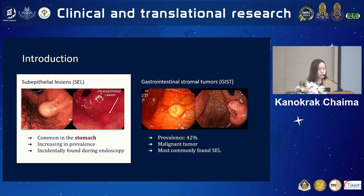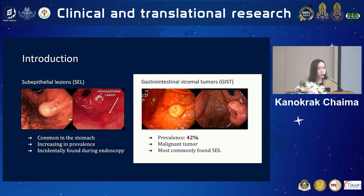This is what sub-epithelial lesions look like in the fundus of the stomach, and recently they are increasing in prevalence and are commonly incidentally found during endoscopy. About 42% of the investigated gastric sub-epithelial lesions are malignant tumors like GIST, which is by far the most common one.